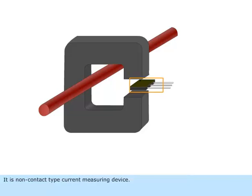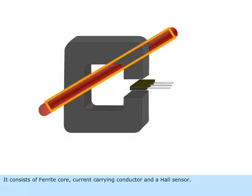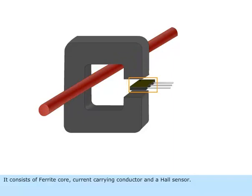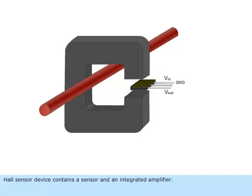It is a non-contact type current measuring device. It consists of a ferrite core, current carrying conductor, and a Hall Sensor. Hall Sensor is a magnetosensitive semiconductor device. The Hall Sensor device contains a sensor and an integrated amplifier.